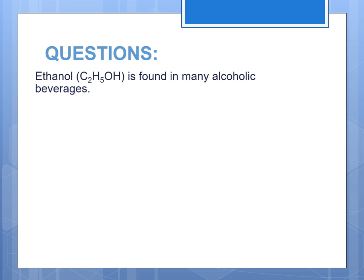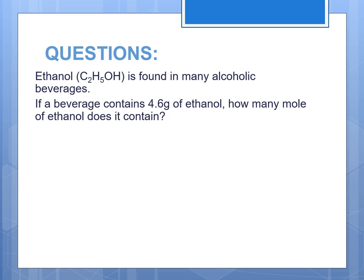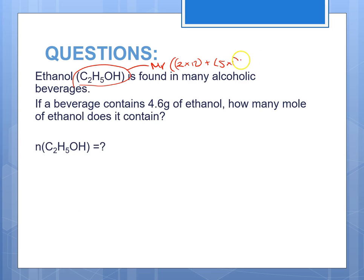Let's look at some example questions. Ethanol, C₂H₅OH, is the alcohol found in beer, wine, and pretty much all alcoholic beverages. We're told that a beverage contains 4.6 grams of ethanol — how many moles of ethanol does it contain? One trick is identifying what information each part of the question gives us. We have a formula, which lets us calculate MR: 2 times 12 for carbon, plus 5 times 1 for hydrogen, plus 16 from oxygen, plus another hydrogen. Anytime we see a formula, we can calculate MR.